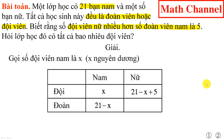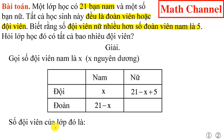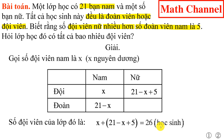Từ đây chúng ta có thể trả lời câu hỏi của bài toán. Số đội viên của lớp đó là: chúng ta lấy số đội viên nam là x, cộng với số đội viên nữ là 21 trừ x cộng 5. Bỏ ngoặc và thu gọn, chúng ta được kết quả là 26 học sinh.